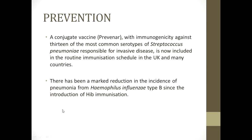Prevention includes hygiene and nutrition, along with vaccinations. A conjugate vaccine provides immunogenicity against 13 of the most common serotypes of Streptococcus pneumoniae responsible for invasive disease, now included in the routine immunization schedule in the UK and many other countries. In Pakistan, the pneumococcal conjugate vaccine is included in the EPI — Extended Program of Immunization. There has also been a marked reduction in pneumonia incidence from Haemophilus influenzae type b since the introduction of Hib immunization, which is also part of Pakistan's vaccination schedule.